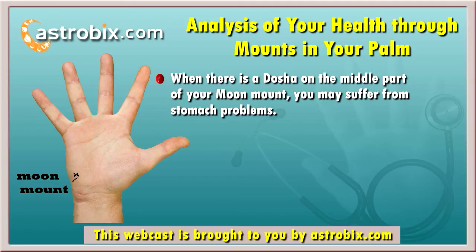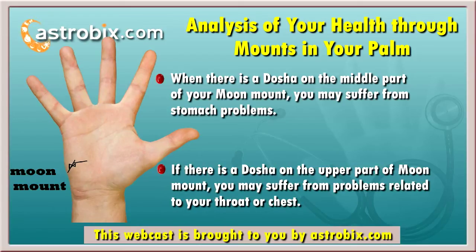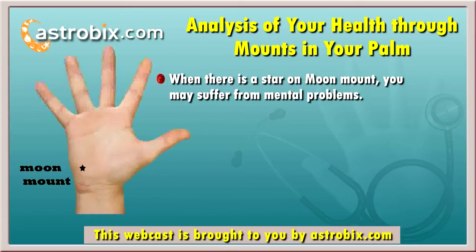Hence, you need to be very careful. If the upper part of your moon mount suffers from a dosha, you may suffer from ailments related to your throat or chest. In such a condition, you need to consult a doctor immediately and should not take it lightly. If a star is clearly visible on your moon mount, there are chances that you may suffer from mental problems.